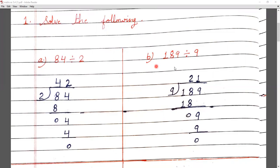Question number B: 189 divided by 9. When we look at the first digit, 1 is smaller than 9, so we need to make a pair. We take 18. In the 9 times table, 9 twos are 18. We subtract 18, remainder 0. Next digit is 9. We bring 9 down — 9 minus 9 is 0. The answer to 189 divided by 9 is 21.